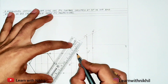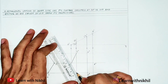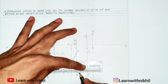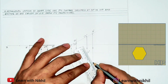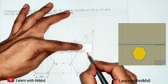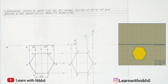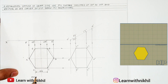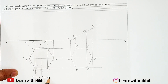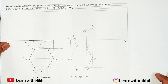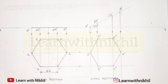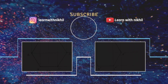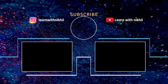Joining these double-dash points gives us the inclined plane view of the hexagonal lamina, as visible in the image. This is the initial position and this is the final position — and we are done. Thank you for watching. Do subscribe to my channel. If you have any doubts or queries, let me know in the comment section. You can also connect with me on Instagram.